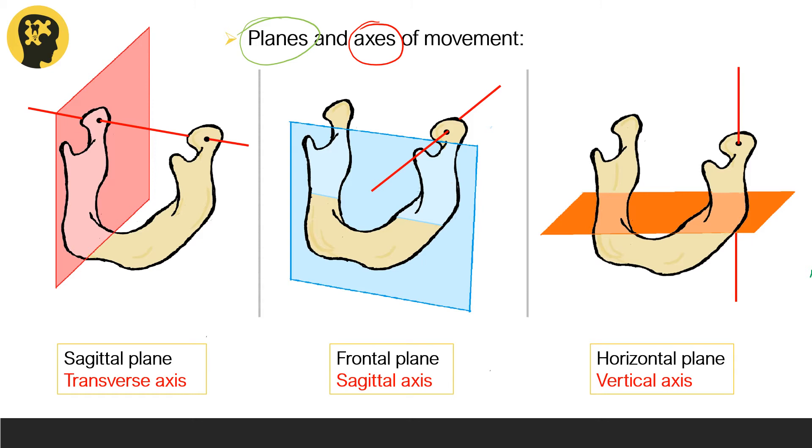If you look at the first scenario right here, we have the sagittal plane. As you can see, it divides the mandible into a right side and a left side, and here we have the transverse axis or horizontal axis. When a body rotates about an axis, the movement occurs in a plane that's perpendicular to the axis.